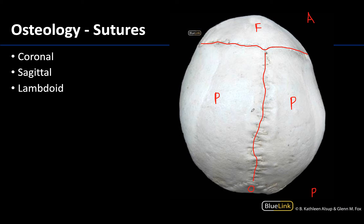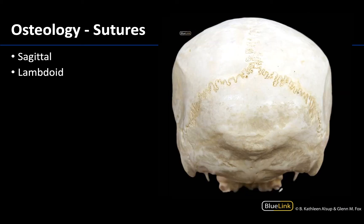Back to the sutures. Between the parietal bones and the occipital bone is the complex lambdoid, or lambdoidal suture. Let's look at some of these from a different view.